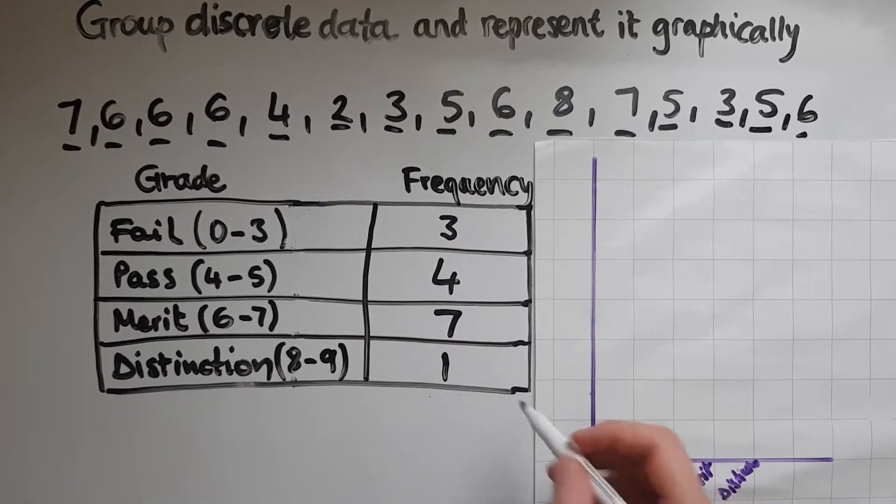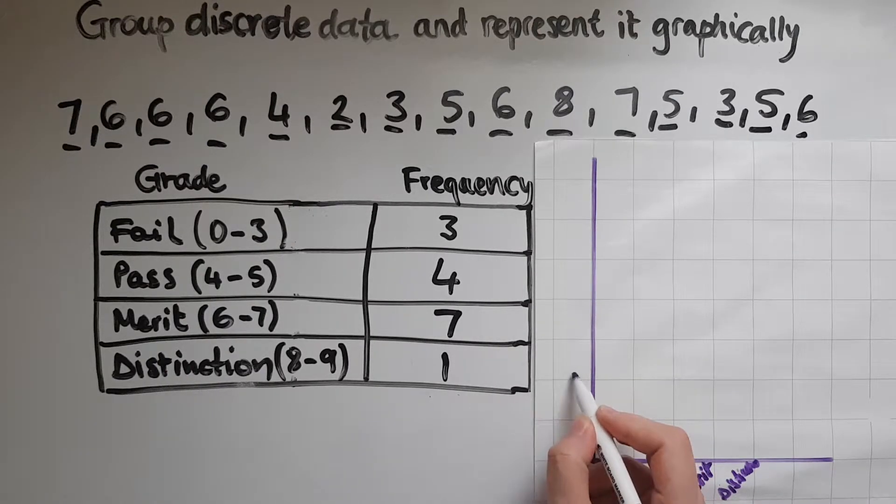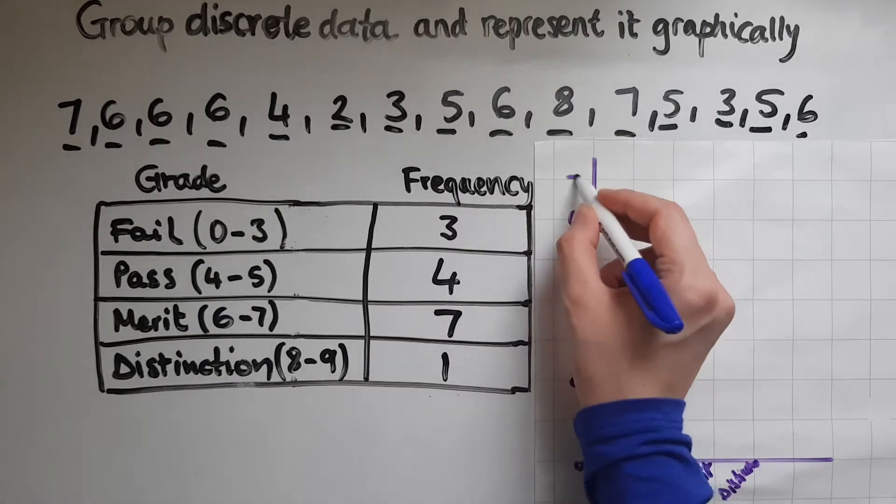So it goes only up to 7. So I'll start with 0, then 1, 2, 3, 4, 5, 6, 7.